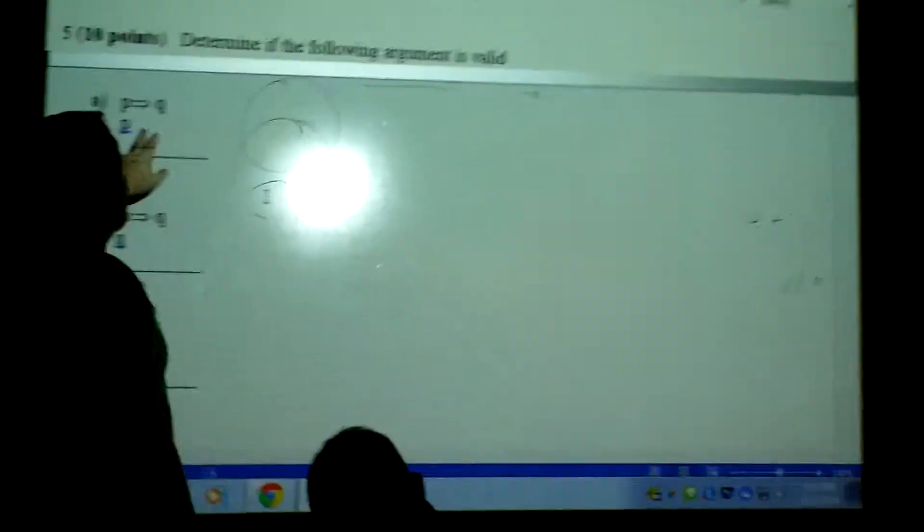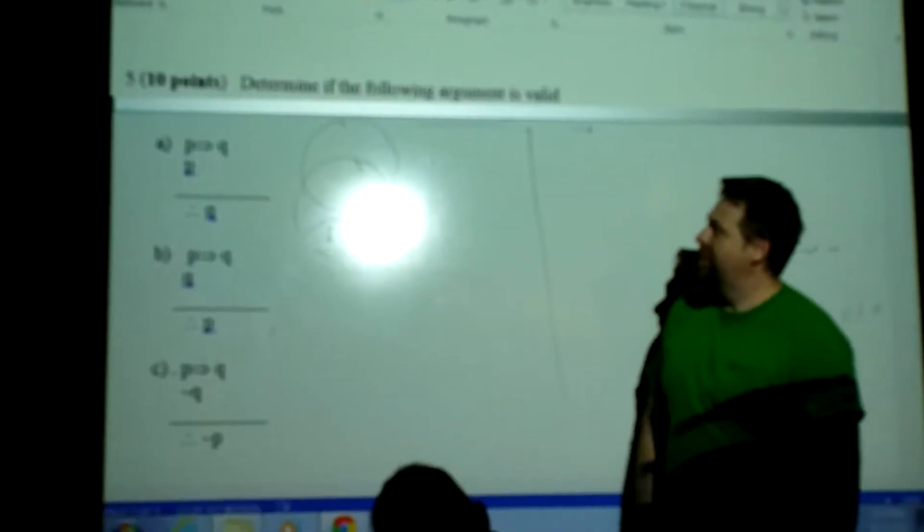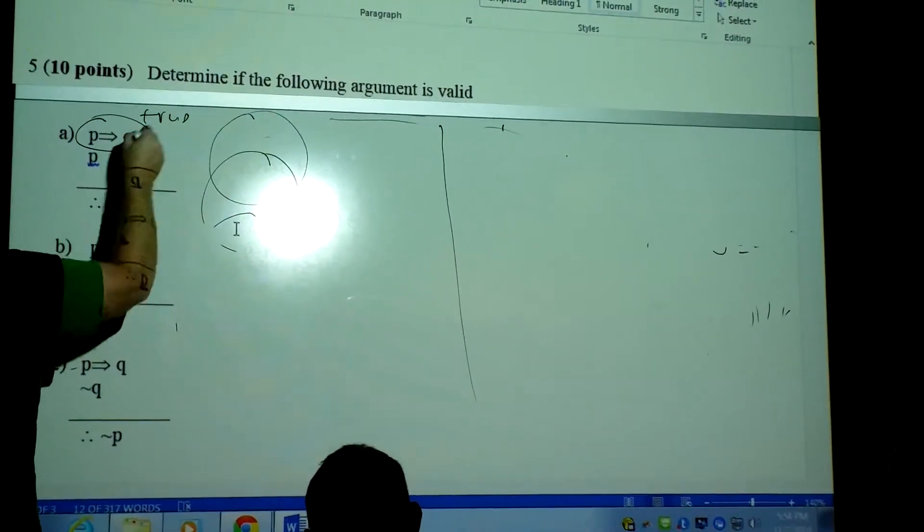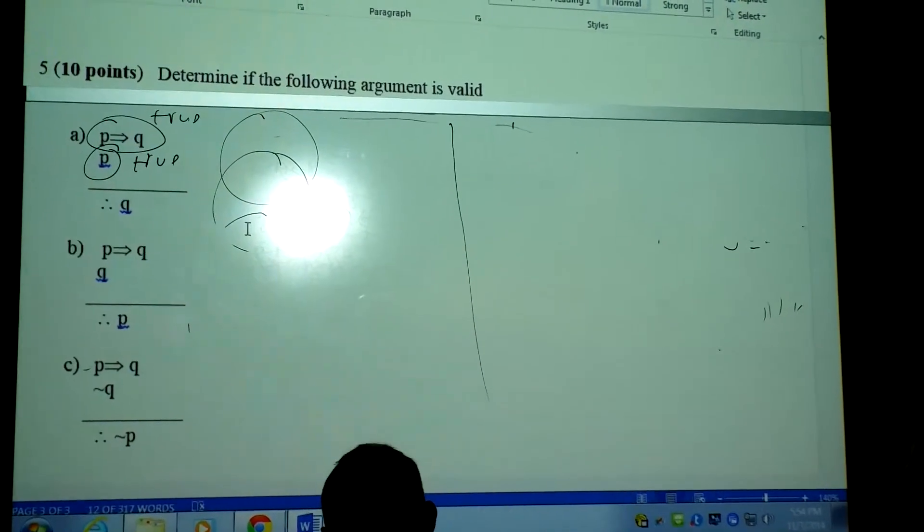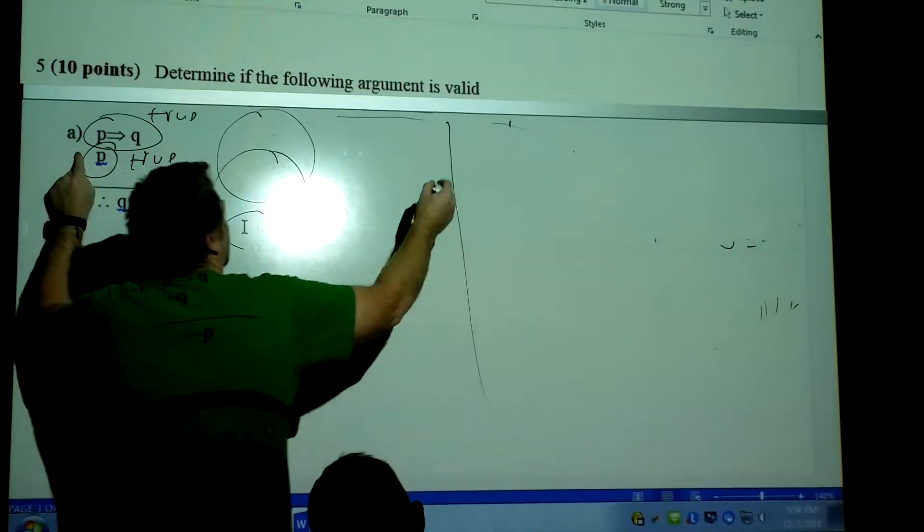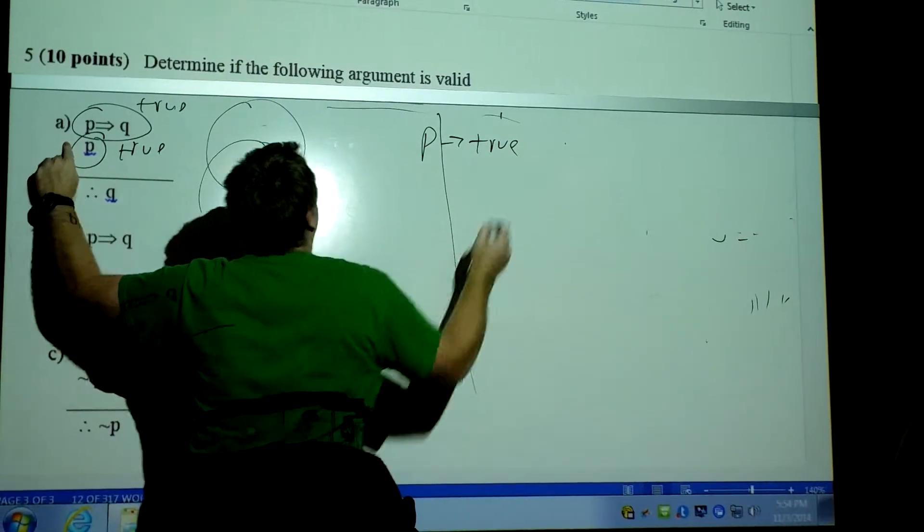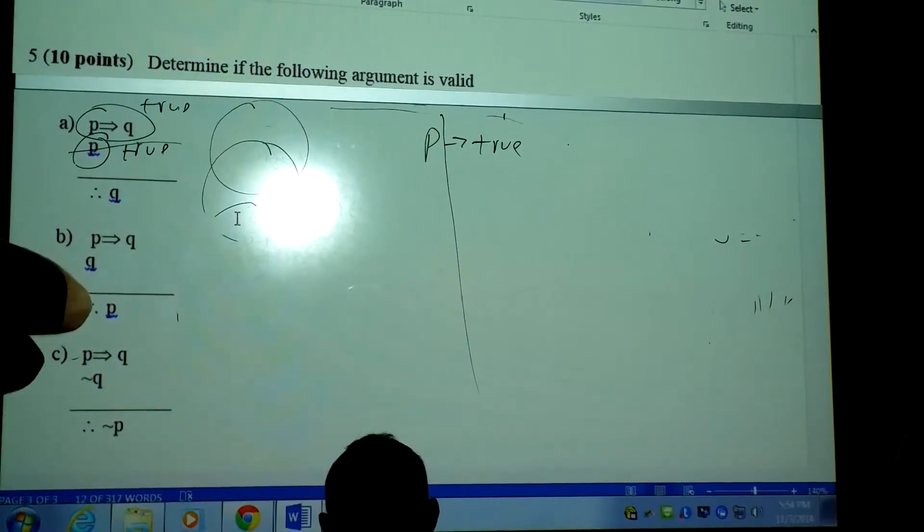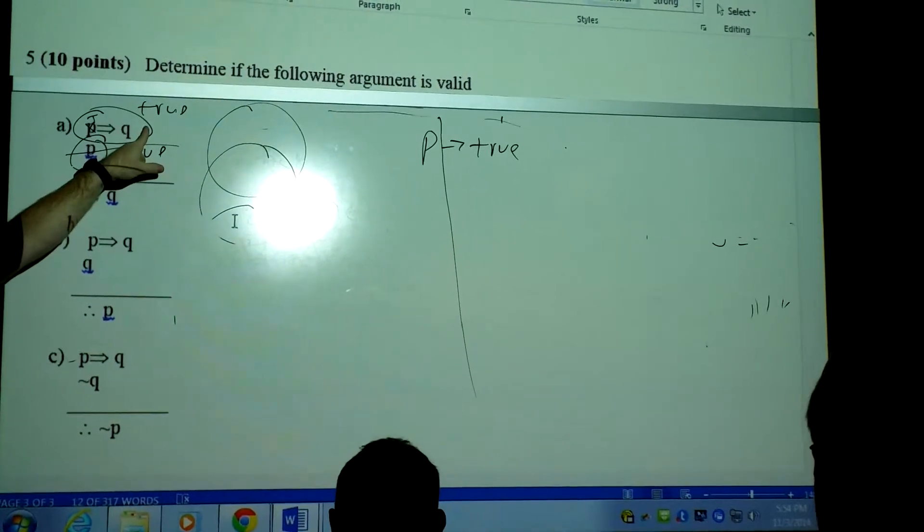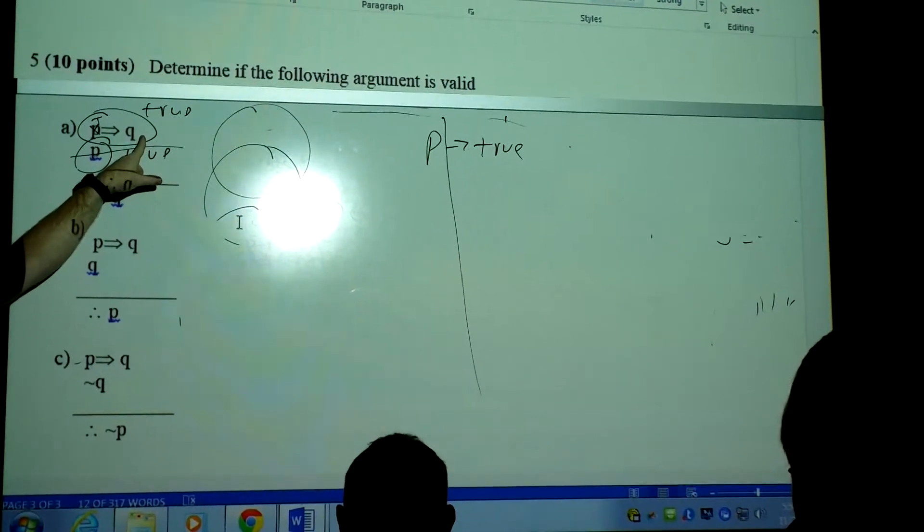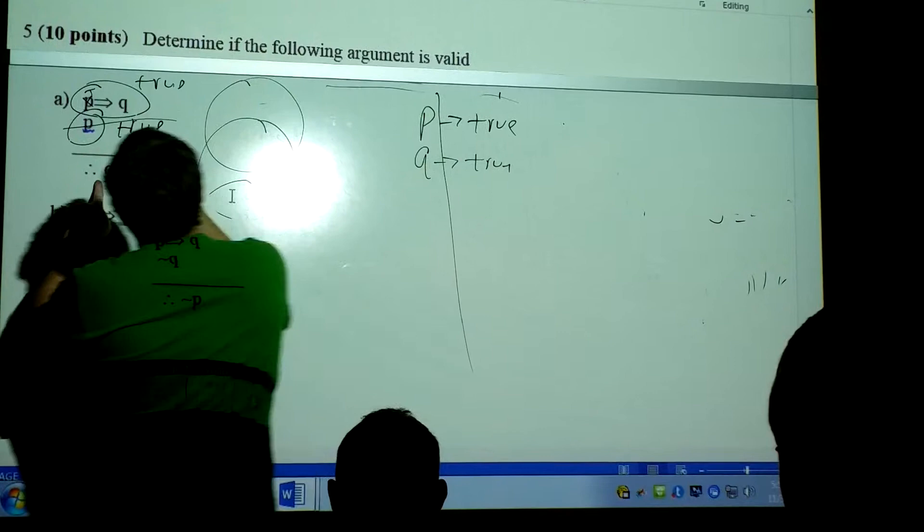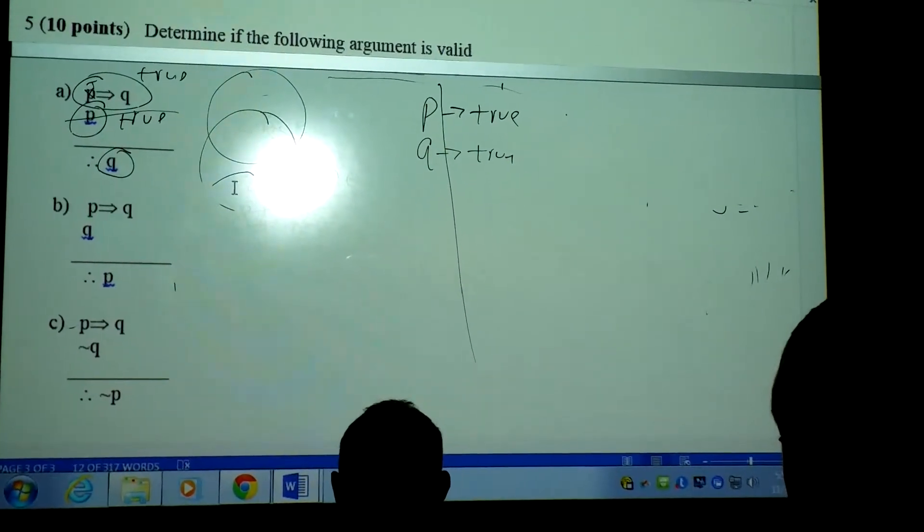P implies Q, P, and therefore Q. Is that true? P is true. You get to assume these are true. And you get to assume this is true. So what do you know from that? That Q is true. You know P is true. So you know P is true. And so you know that's true. Let's plug in what we know. We know true implies Q is true. So what's true implies true? What's true implies false? False. So Q has to be true. And the conclusion is Q is true. So that's valid.